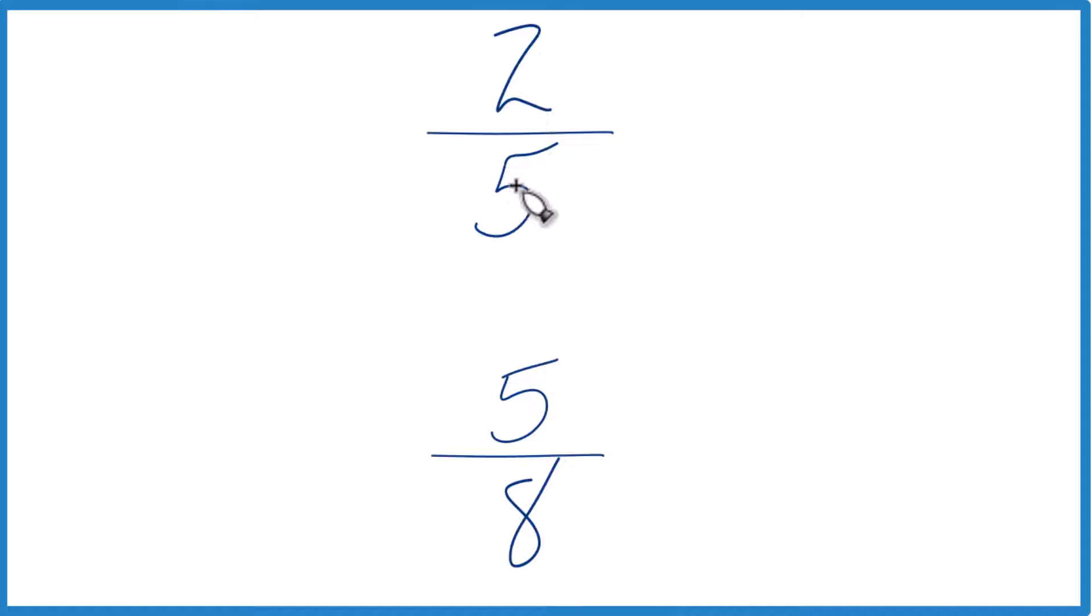Well, you could just take 2, divide that by 5 on a calculator, get a decimal, and then divide 5 by 8, get a decimal, just compare the decimals, and that would tell you whether 2 fifths is greater than, less than, or equal to 5 eighths.